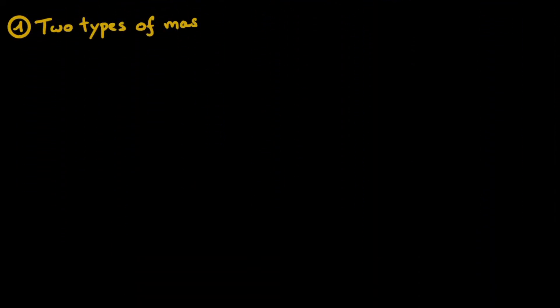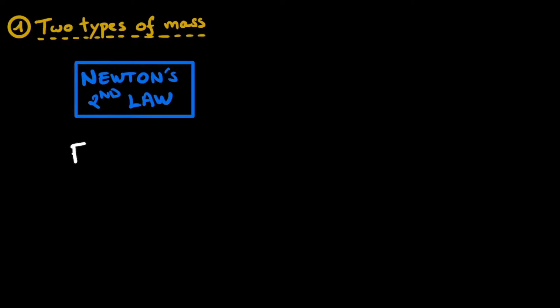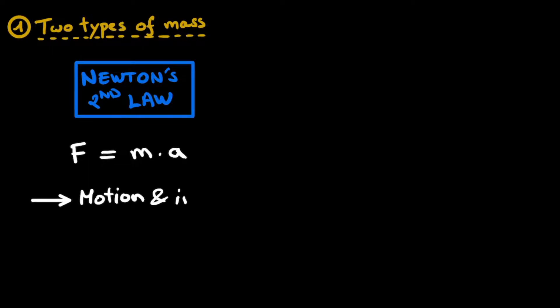Let me explain what I exactly mean by two types of mass. There are two fundamental formulas in nature that contain the property mass. On the one hand, we have Newton's second law, which says that F is equal to the mass of an object times its acceleration. This formula links the force that you need to apply on an object in order to give it a certain amount of acceleration, and the proportionality constant is this mass m. This is a formula about motion and inertia, which is why we call the mass in this formula the inertial mass — the thing that makes it much harder to push a truck than it is to push a bike.